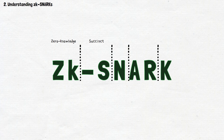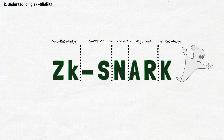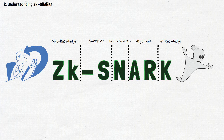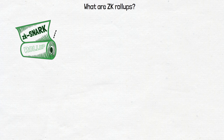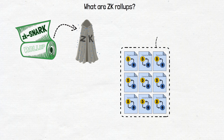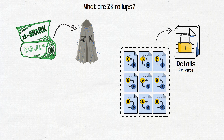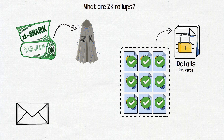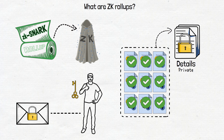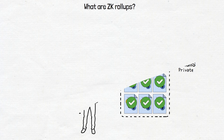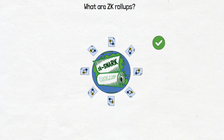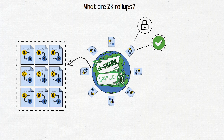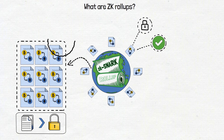ZK SNARK stands for Zero Knowledge Succinct Non-Interactive Argument of Knowledge — but don't let the name scare you away. You can simply refer to these rollups as ZKs. Think of a ZK as the invisibility cloak in the crypto world. When transactions are bundled up using ZKs, all the details are hidden, keeping things private while still ensuring the validity of the transaction itself. It's like sending a secret message that only the intended recipient can read, while everyone else sees a bunch of random characters. ZKs allow you to prove that a transaction is valid without revealing any sensitive information, and all the transaction details remain hidden, yet the network can confirm their legitimacy.